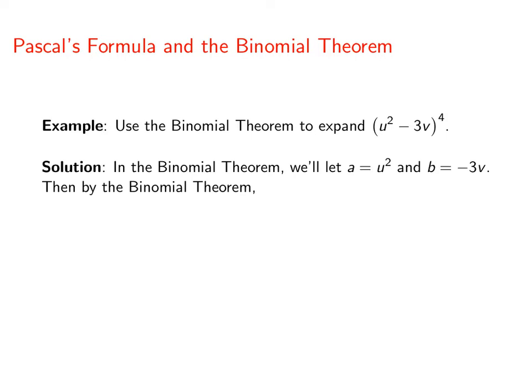Then, by the binomial theorem, we're first going to rewrite the expression as u squared plus negative 3v to the fourth power.